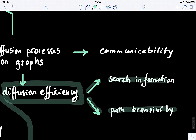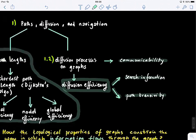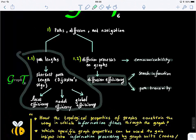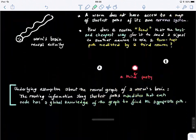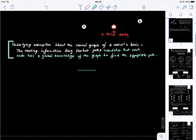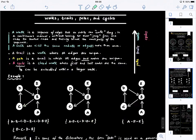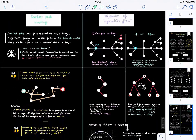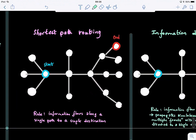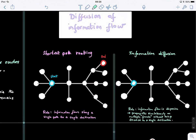We will also look at the concept of communicability between nodes, or communicability of a graph. So let's start from where we left off in the previous lecture.